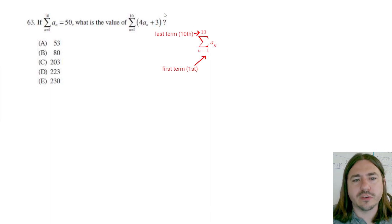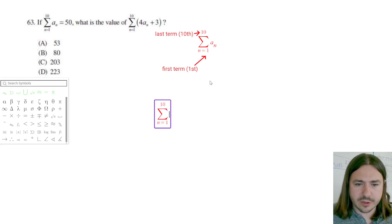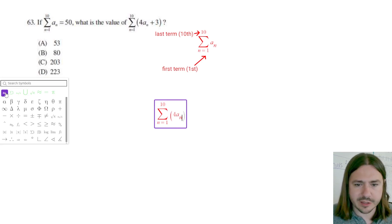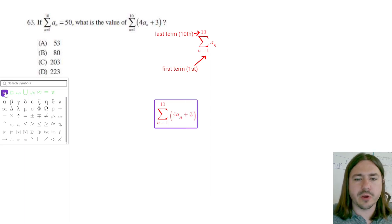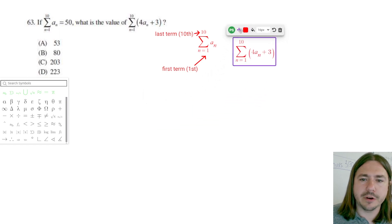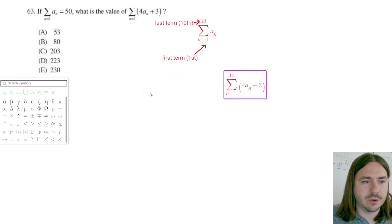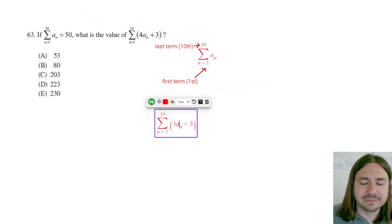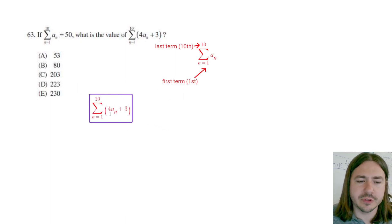So this is asking: what is the sum of this sequence? We have the sum of 4 a sub n — where a sub n is the sequence we talked about earlier — plus 3. And what we're going to do is apply some properties of the sigma notation.